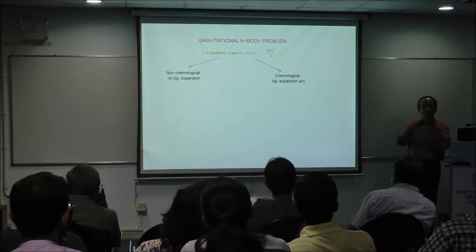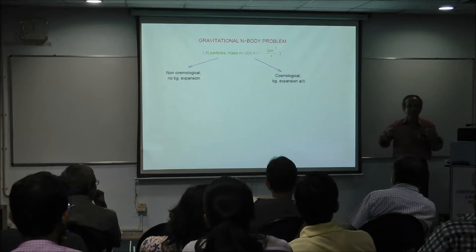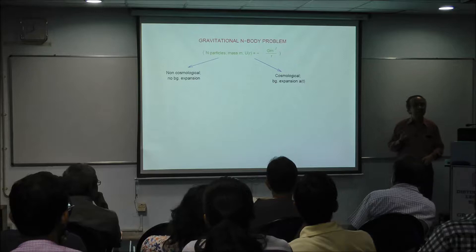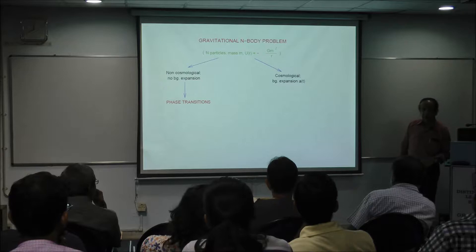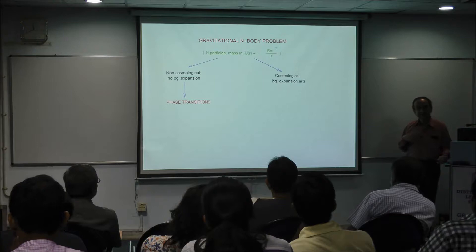The point is you can immediately understand that this kind of universally attractive force is unstable — everything will try to sit on top of each other. But if there is an expansion, the expansion tries to pull these things away. So there are very interesting local equilibria, which can be weak. And this is how a lot of structure formation in the universe takes place. This is also related to phase transitions.